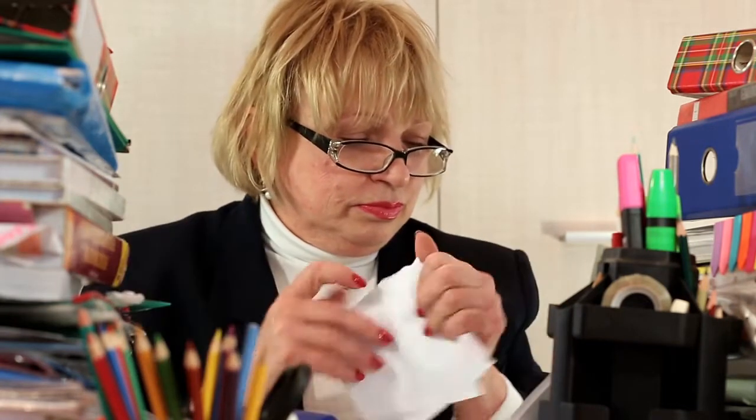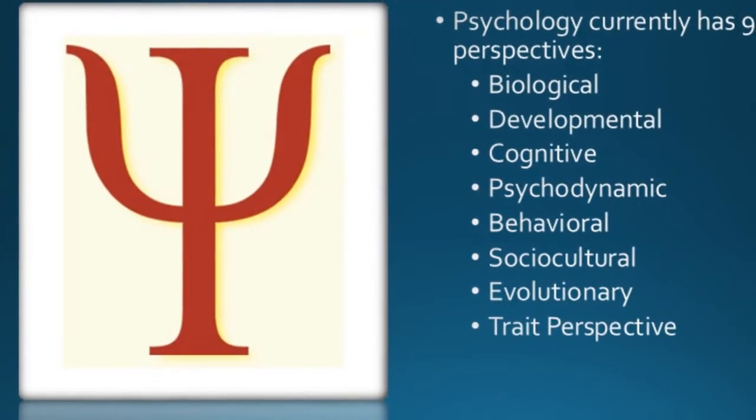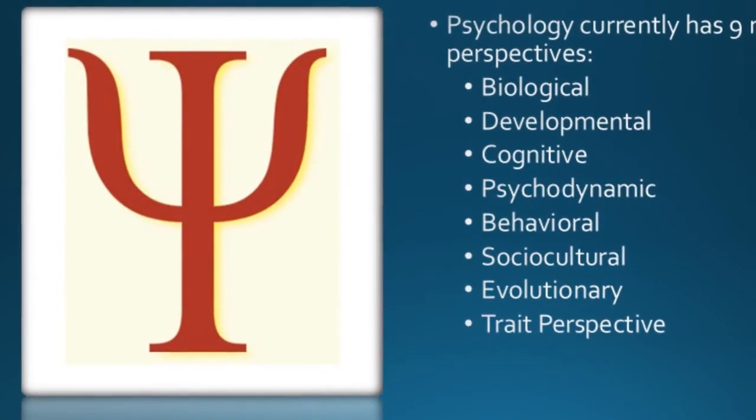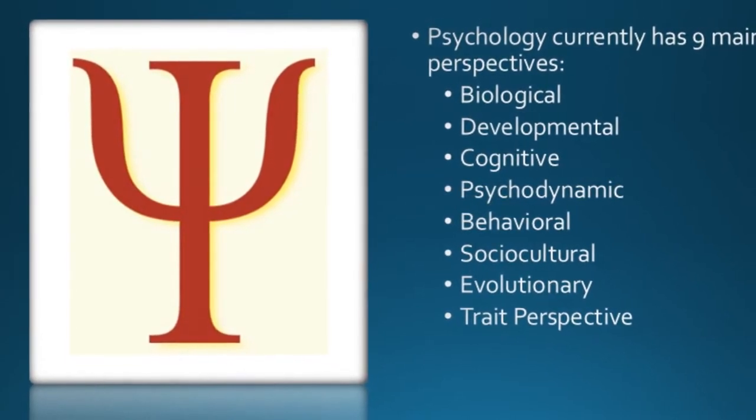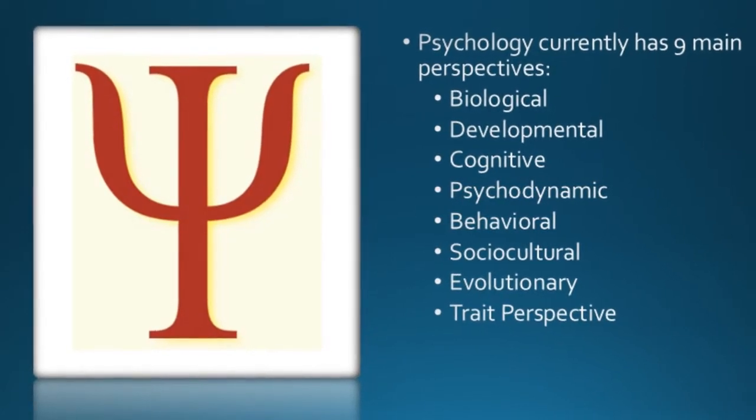So modern psychology is rooted in history. And there's going to be these different perspectives coming out. We've now covered structuralism and functionalism, but there's going to be more: gestalt psychology, behaviorism, psychoanalysis, and even more. So we're going to be covering nine main perspectives here. Some people bring it down to seven, some to eight different levels, but we're going to be going over biological, developmental, cognitive, psychodynamic, behavioral, sociocultural, evolutionary trait perspective, and a few more here and there. But let's start with that one that I already mentioned, gestalt psychology.